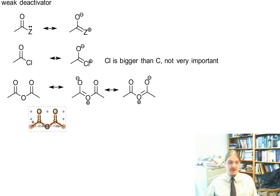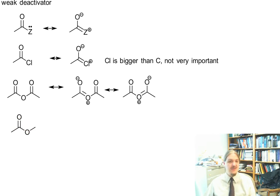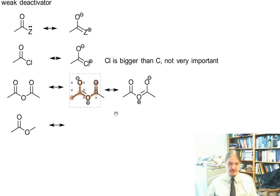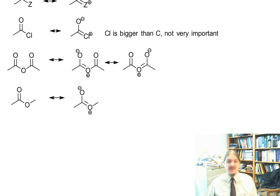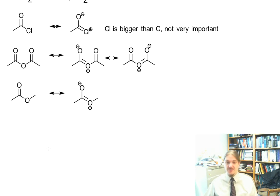The carboxylic acid and the ester are fairly similar, so we'll just do the ester. Now there isn't another electron withdrawing carbonyl group on the other side of that oxygen, so this resonance contributor is more important for the ester than it is for the anhydride.